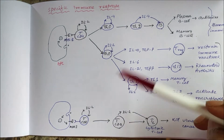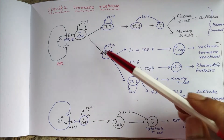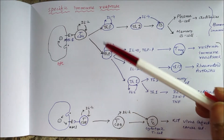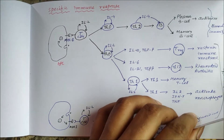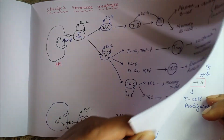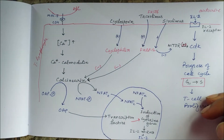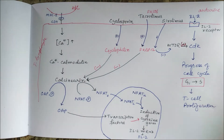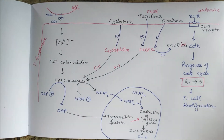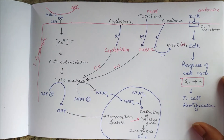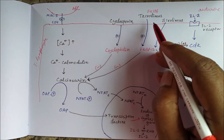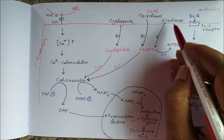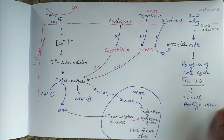Interleukin-2 plays a major role in the specific immune response. Both the action and production of interleukin-2 are inhibited by drugs like cyclosporine, tacrolimus, and sirolimus, all of which are used as immunosuppressants.